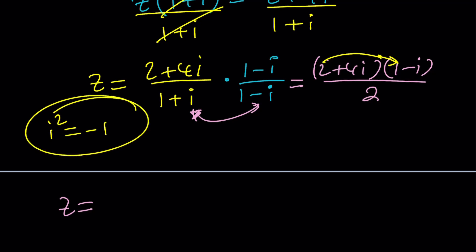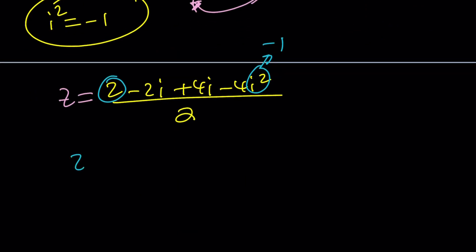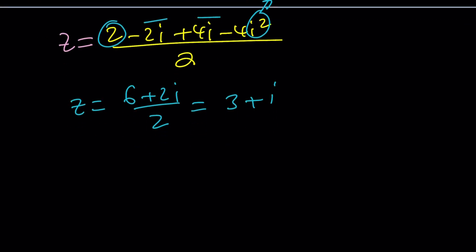So 2 times 1 is 2. 2 times negative i is negative 2i. 4i times 1 is 4i. And then finally, 4i times negative i is negative 4i squared divided by 2. Now, remember, i squared is negative 1. So this becomes positive 4. 2 plus 4 is 6. So z becomes 6. And then these two give me plus 2i divided by 2. And if you divide the real part and imaginary part by 2, you get 3 plus i. So z equals 3 plus i is a solution.